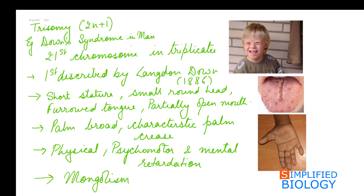Next is trisomy, in which the chromosome number is 2n plus 1 — meaning instead of 46 chromosomes there are 47. This means one chromosome is present in triplicates: instead of 2 homologous chromosomes, one chromosome has 3 copies.